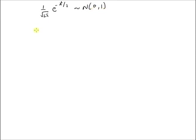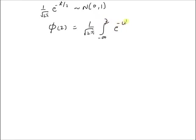So in this video, we will look at the CDF of this probability density function. The CDF, which is usually represented by the letter Phi, is defined as: Phi(z) equals 1 over square root of 2π times the integral from minus infinity to z of e to the power of minus u squared by 2 du. So this is the definition of the CDF of a standard normal random variable.